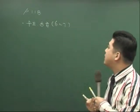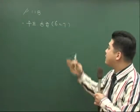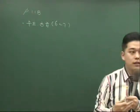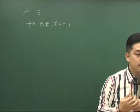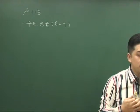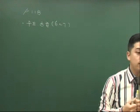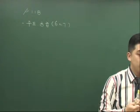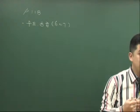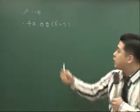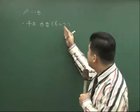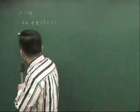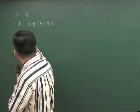수요공급이론에서는 한 6문제에서 7문제 정도가 출제됩니다. 가장 작게 나와도 5개 정도 나올 거고 평균적으로 한 6개에서 7개 정도가 출제될 가능성이 있습니다. 참고로 작년에는 6개 나왔고, 재작년에는 8개가 출제됐습니다. 보통 6개에서 7개 정도 평균적으로 출제되는데, 첫 번째는 수요공급의 정의에 대해서 보셔야 됩니다.